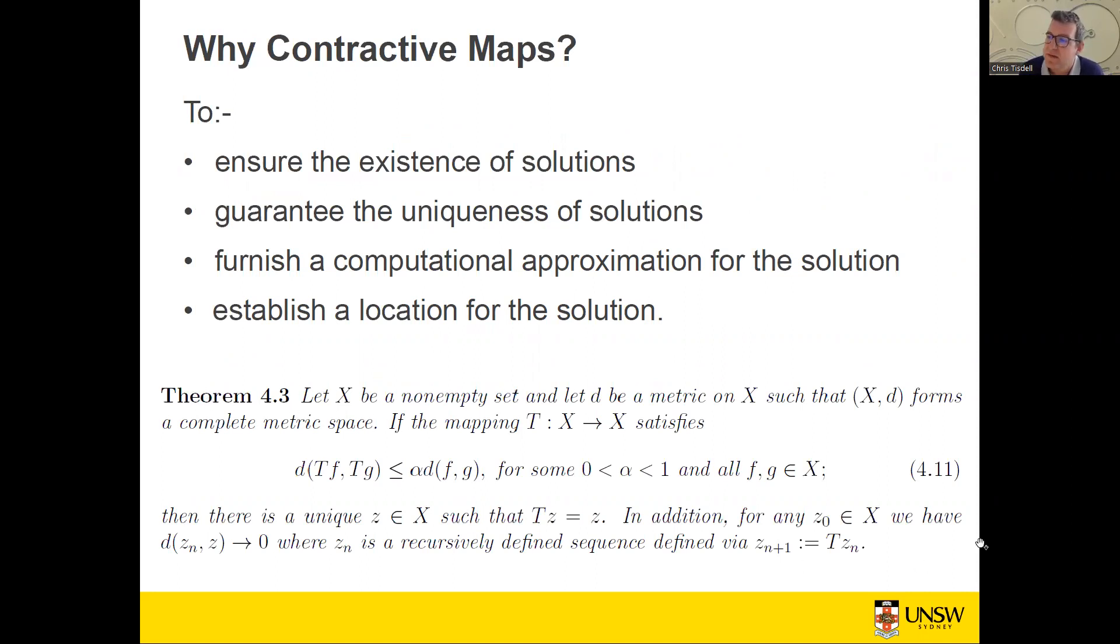Theorem 4.3 is the main theorem that we're going to use: Banach's fixed point theorem or the contractive mapping theorem. You've got a non-empty set and D, a way of measuring distance between elements of this set. This pair is assumed to form a complete metric space. Now, if the mapping T is an invariant, so it maps X back into itself and it satisfies this contraction condition where alpha is some positive constant between zero and one, then the conclusion is that there's a unique member of this set X that is invariant under this operator T. So T of Z equals Z.